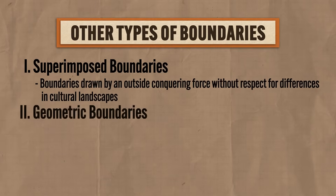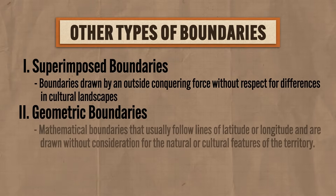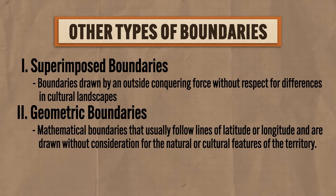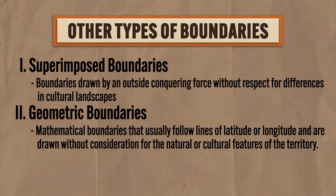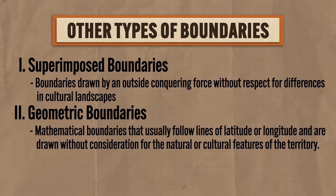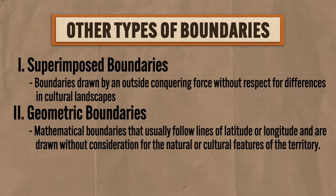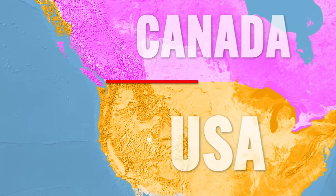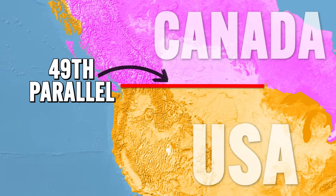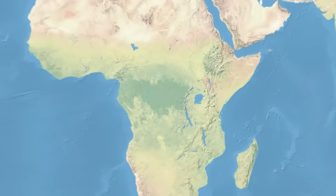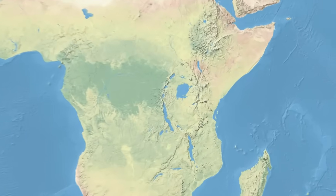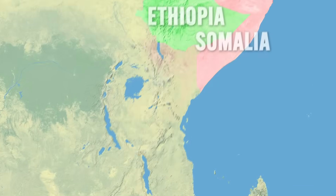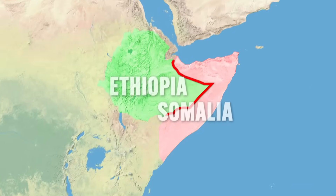Fifth, you need to know geometric boundaries, which are mathematical boundaries that usually follow lines of latitude or longitude and are drawn without consideration for the natural or cultural features of the territory. For example, the western US-Canada border follows the 49th parallel. Consider also the superimposed colonial boundaries in Africa, like those between Kenya and Tanzania or Somalia and Ethiopia.